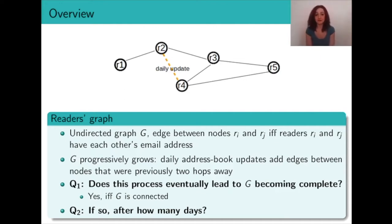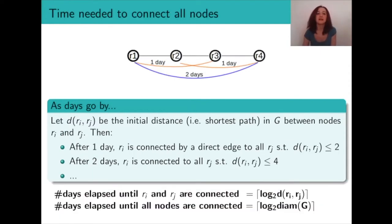Now of course the answer to the first question is yes if and only if the graph is connected. And then for the second question let us take a look at what happens for a given node ri in the graph.